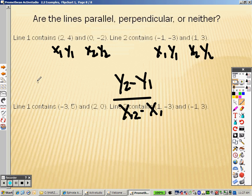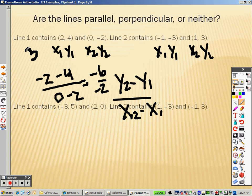So when I'm doing this, it's negative 2 minus 4 over 0 minus 2, which is negative 6 over negative 2. So the slope of this line is a positive 3.